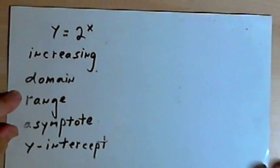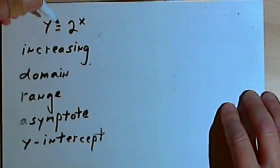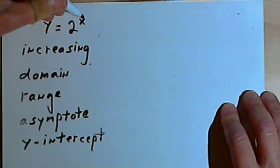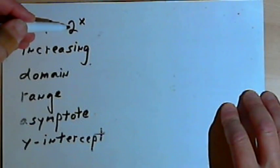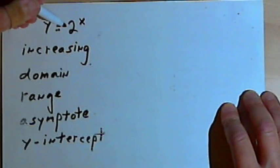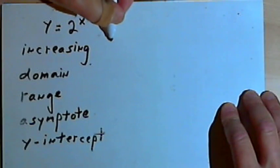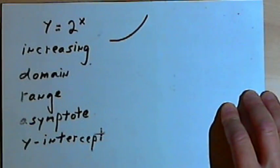The basic function I want to use as an example is y equals 2 to the x. Now whenever the base is a number greater than 1, you're going to have an increasing function. It's going to curve upwards from left to right.